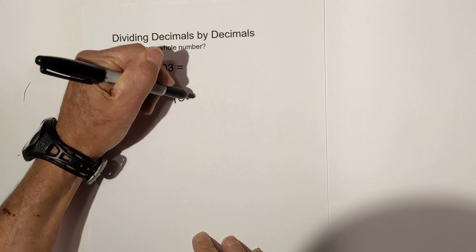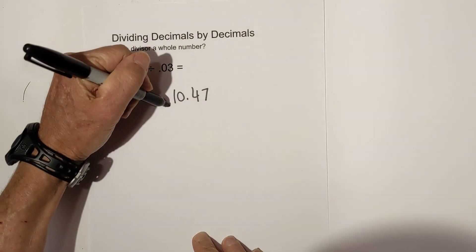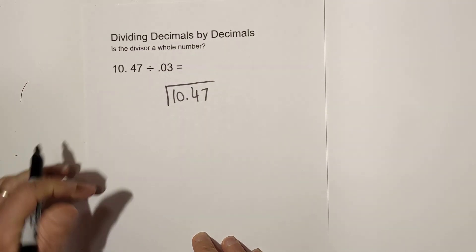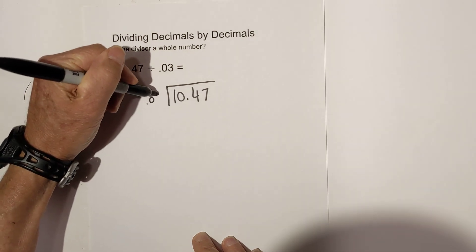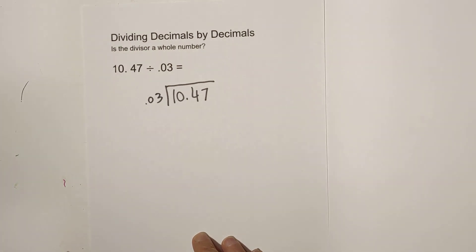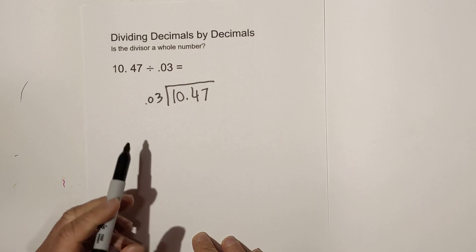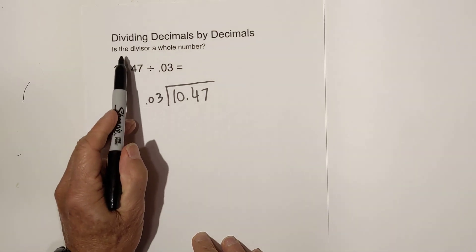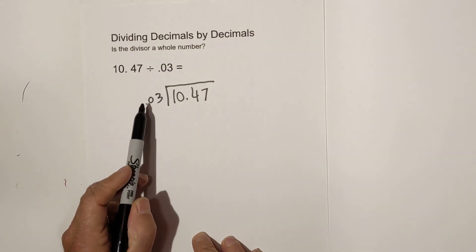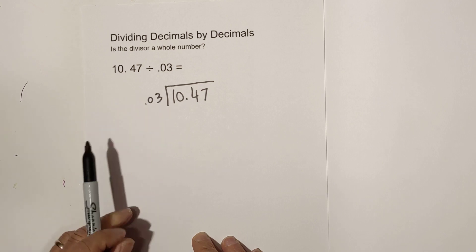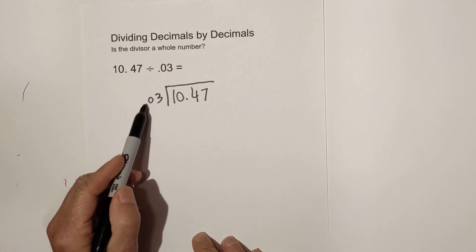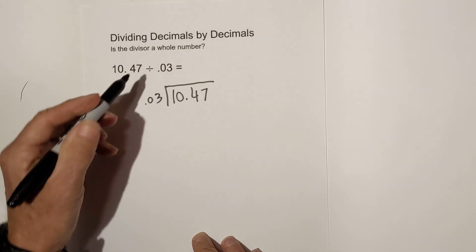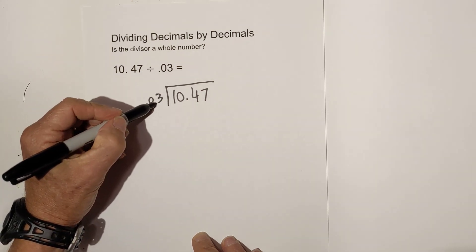We've got 10 and 47 hundredths divided by 3 hundredths. So the next question you need to ask yourself is, is the divisor a whole number? And if you look at this, it is not. So what we need to do is begin to move the decimal place. Technically, you're multiplying it by 10.